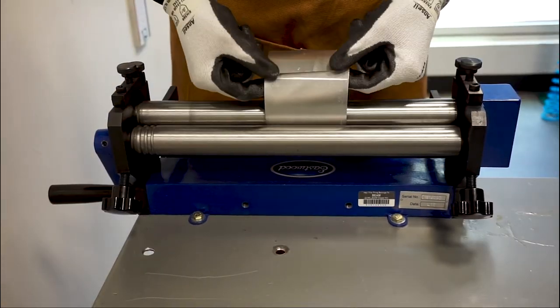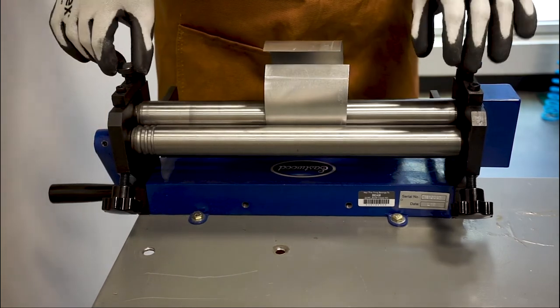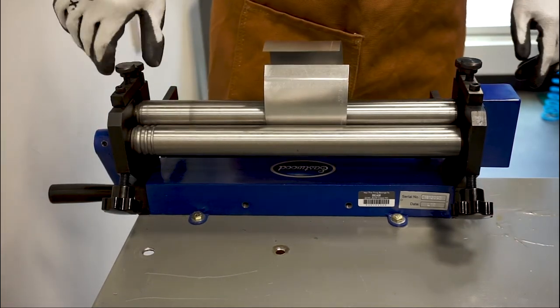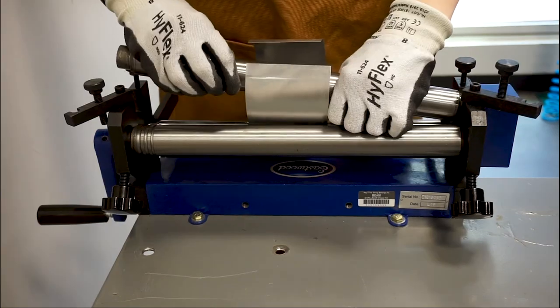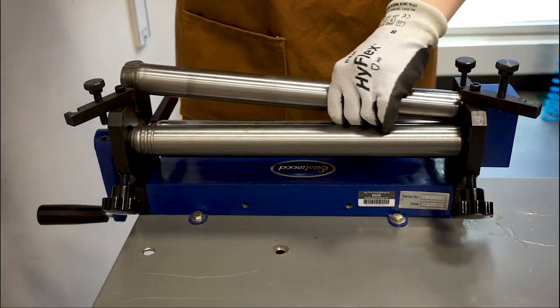If your cylinder or cone is curved completely around the top roller, you can unscrew the top roller release knob and release the top roller latch in order to lift the top roller up and out of the slip roll and easily slide your cylinder or cone off.